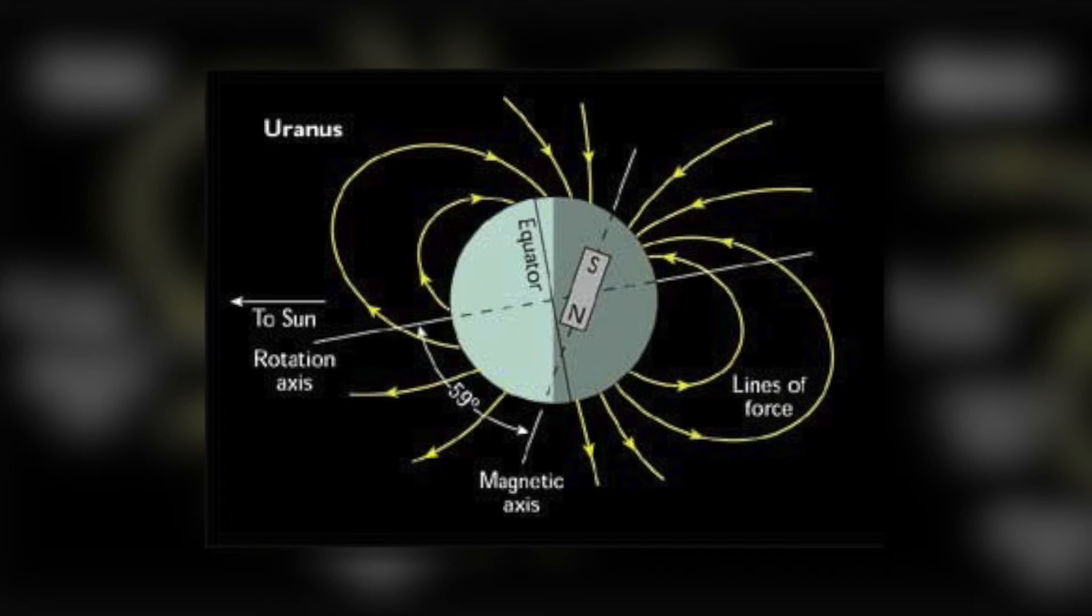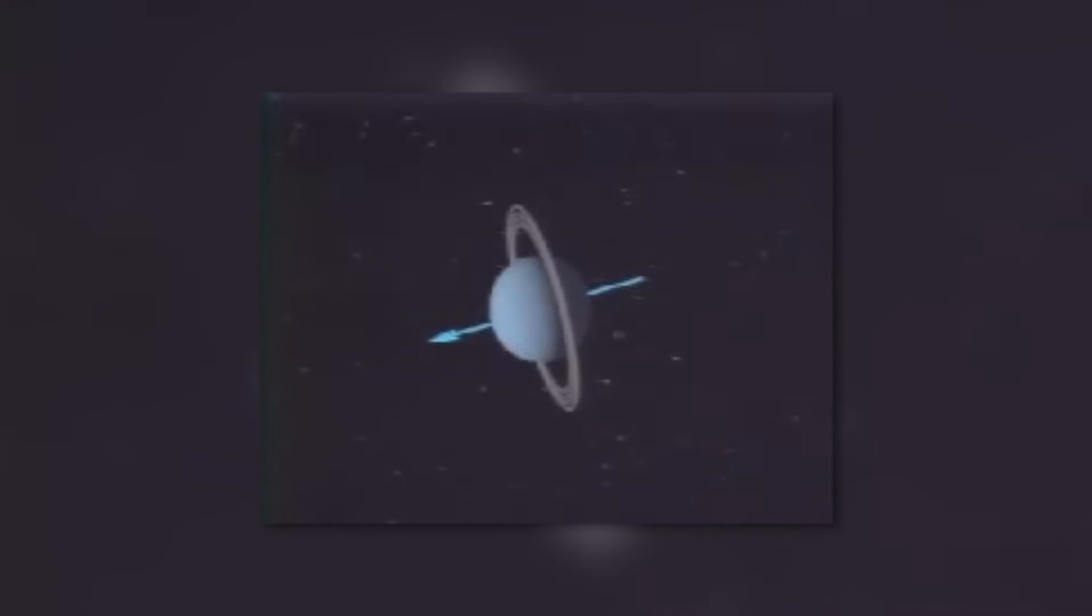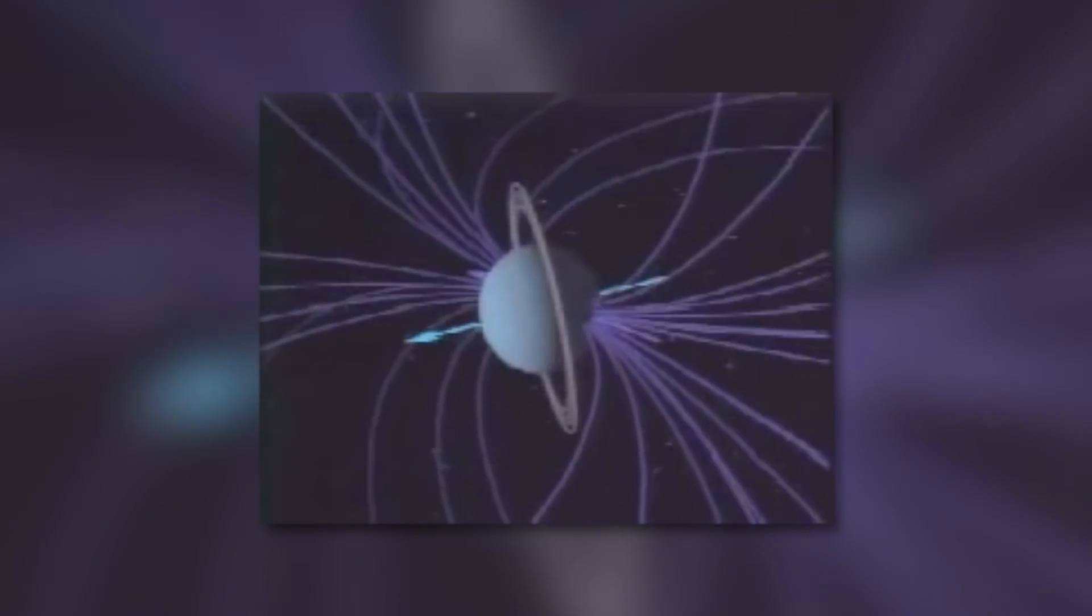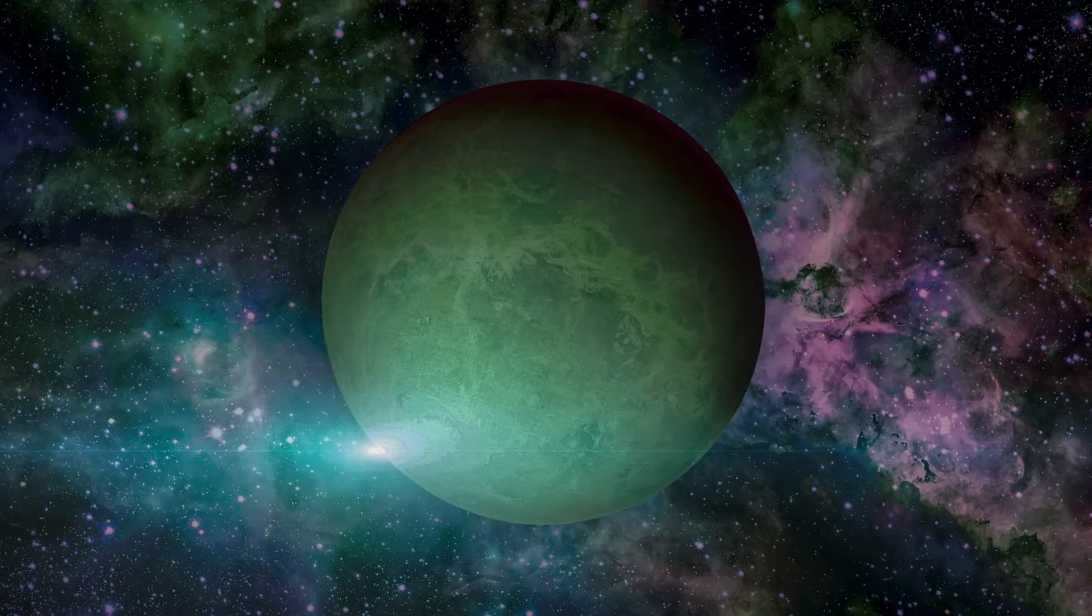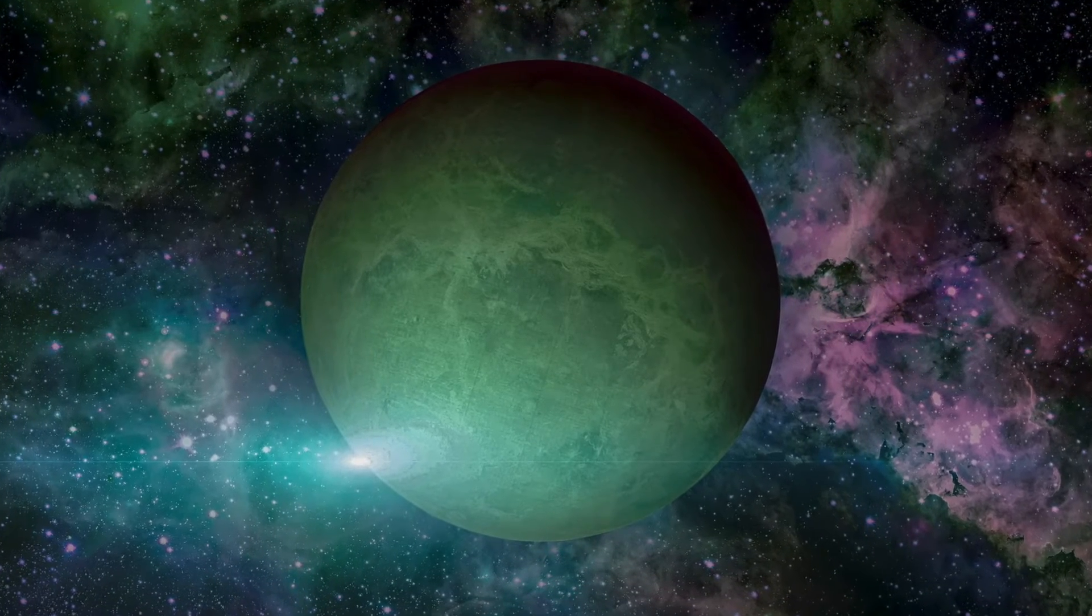They believed that Uranus's 98-degree inclined spin axis and 59-degree inclined magnetic field would provide the ice giant with an enormous magnetosphere. However, this assumption turned out to be wrong. Recent studies show that the magnetosphere of Uranus is no different from other planets, but the reason for this is not known. Astronomers confirm that there are auroras on Uranus which resemble the southern and northern lights on Earth.